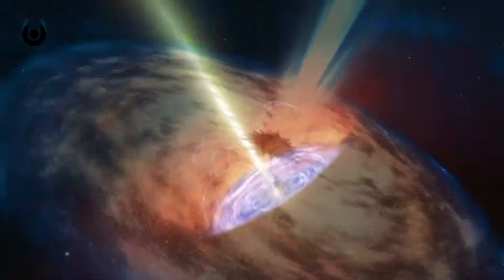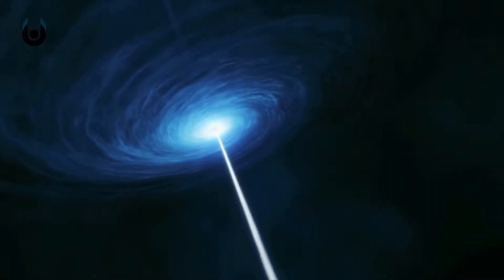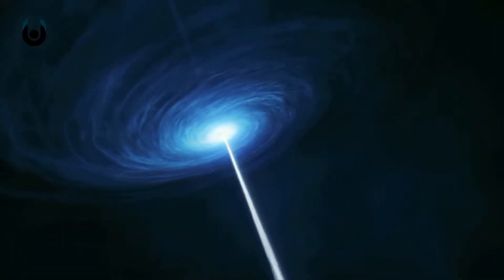Instead, the light we see comes from magnetic fields near a spinning black hole that propel electrons outward in a jet along the rotation axis. The electrons produce bright radio waves.